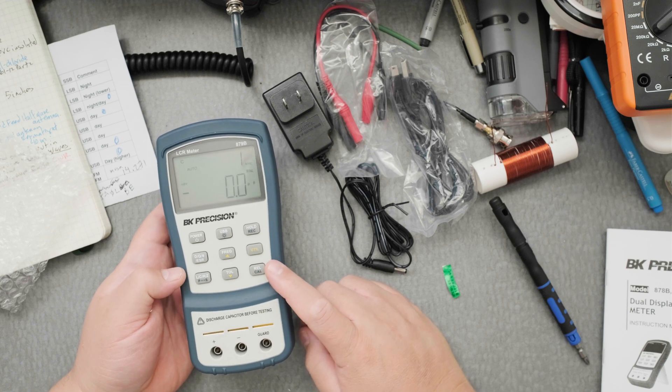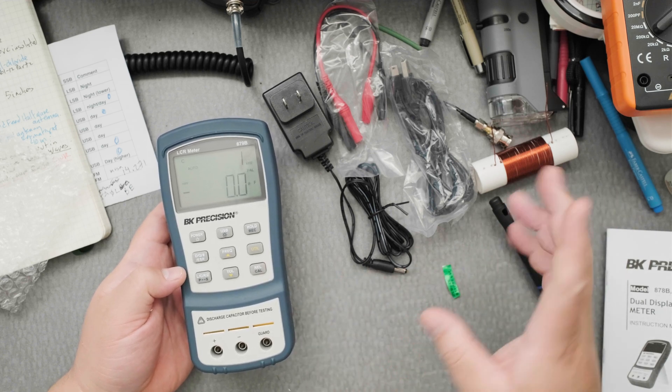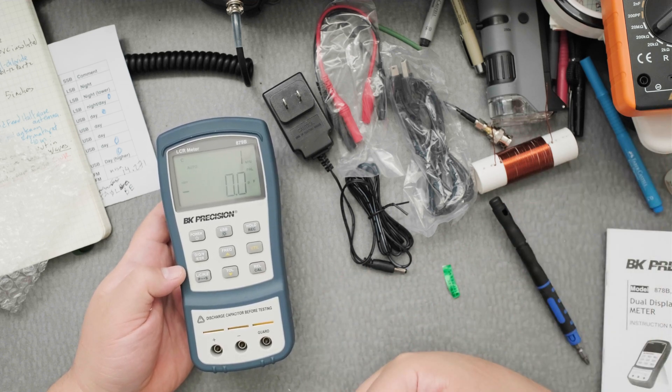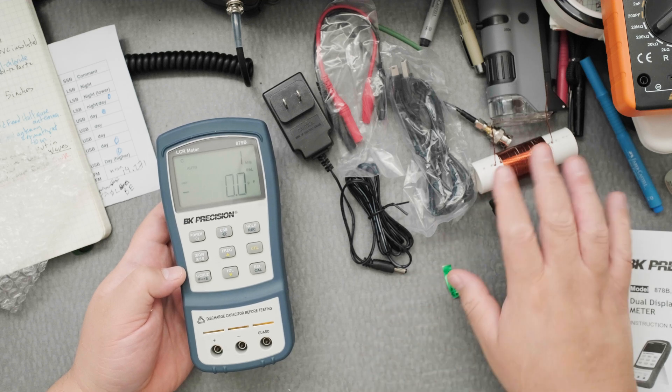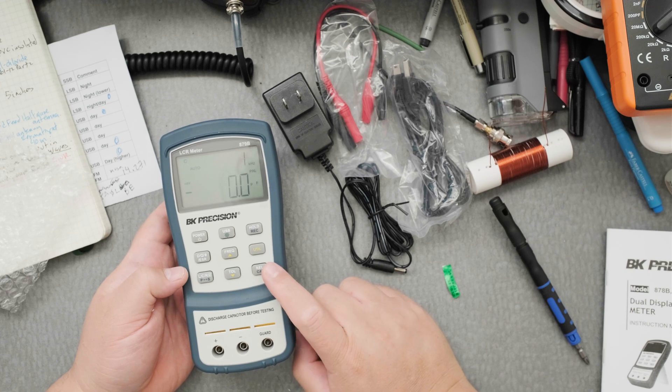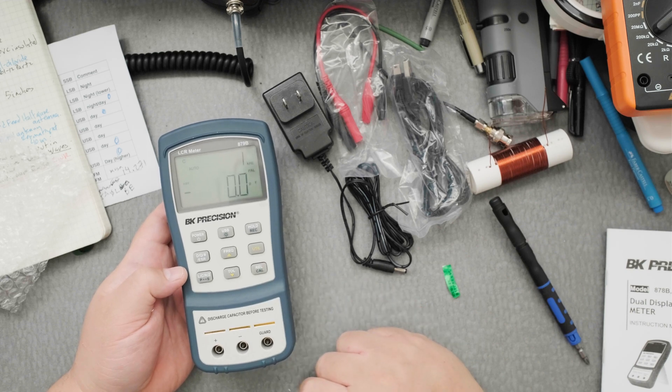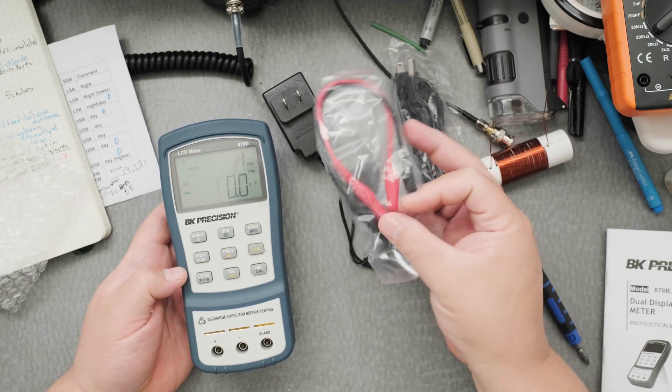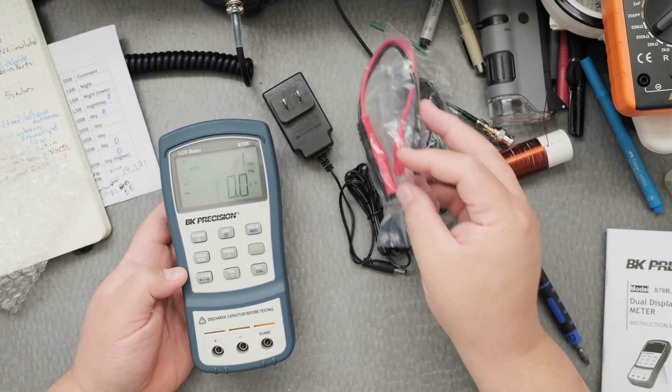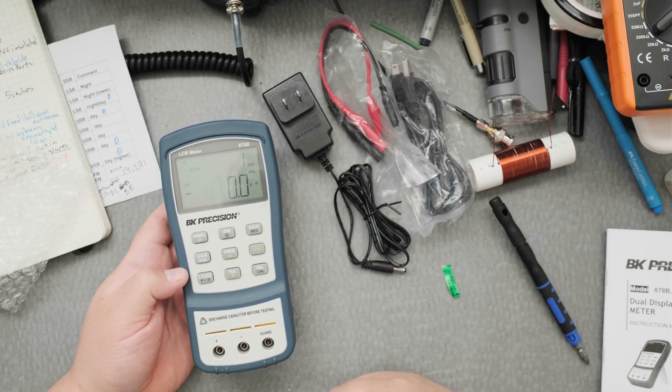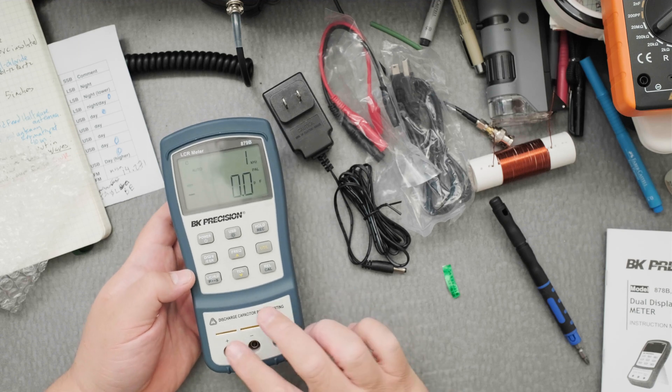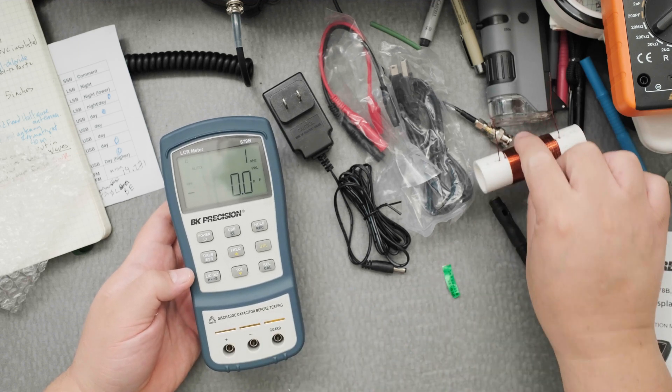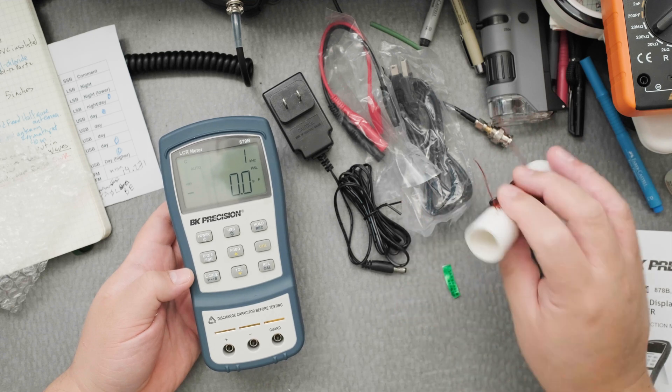And also calibration is important. I know the Proster has something like a calibration for the capacitor, but I don't know for the inductance. But here you can calibrate it, and it gives you an ability to make sure that something like the leads don't affect your measurement, because I know the length of the leads can affect the way the coil is measured.